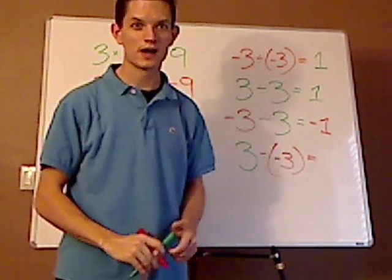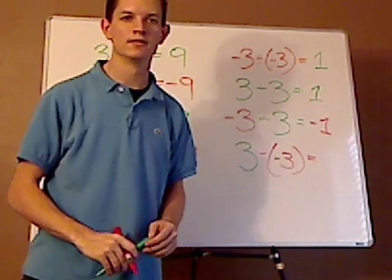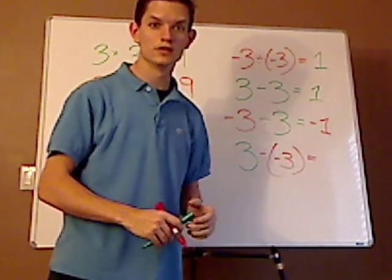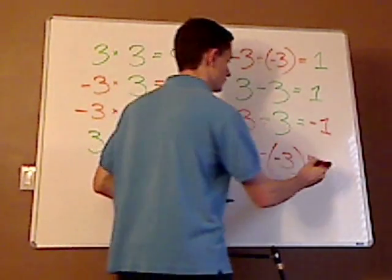What about a positive 3 divided by a negative 3? What would that give you? Right. Since the signs are different, you're going to get a negative number. And, that will give you a negative 1.